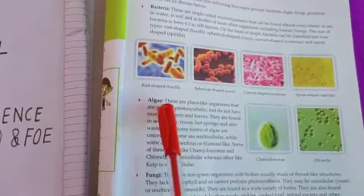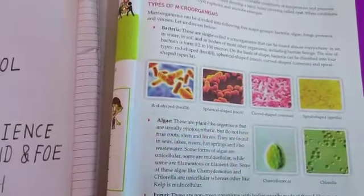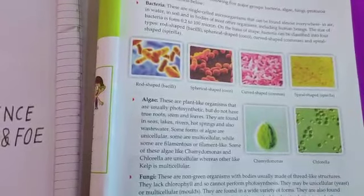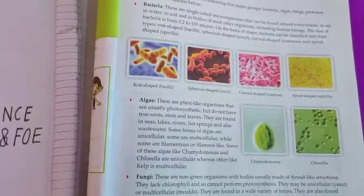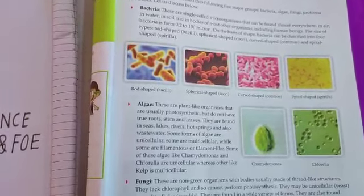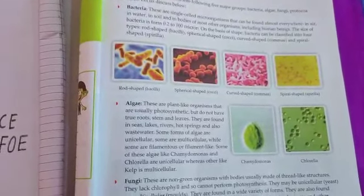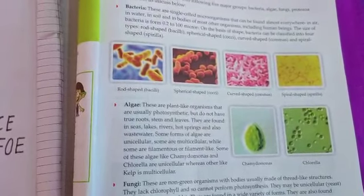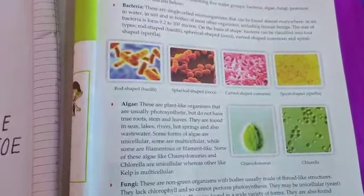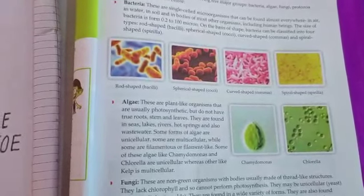Next: algae — शैवाल. These are plant-like organisms that are usually photosynthetic but do not have true root, stem, and leaf. शैवाल जो होती हैं वो plant जैसी होती हैं — means इसके अंदर पौधों के गुण पाये जाते हैं और ये अपना भोजन स्वयं बनाती हैं। But इसकी root, stem और leaf जो होती हैं वो true नहीं होती। They are found in sea, lakes, river, hot springs, and also in waste water.